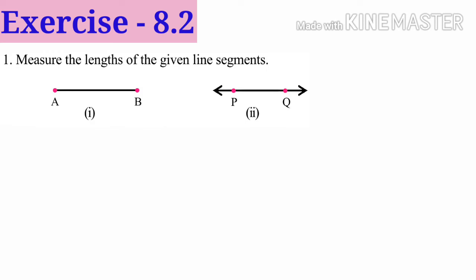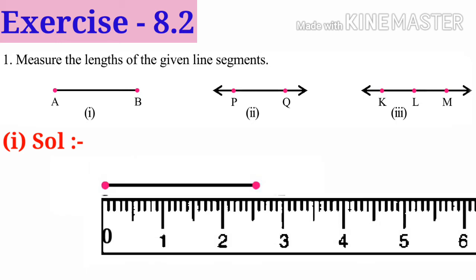Now let us do Exercise 8.2. First problem: Measure the lengths of the given line segments. Solution number 1. Given line segment AB, take the scale, coincide 0 at point A and count the number of millimeters after 2. That is 1, 2, 3, 4, 5, 6. So 2 after 6 millimeters, which is 2.6 centimeters.